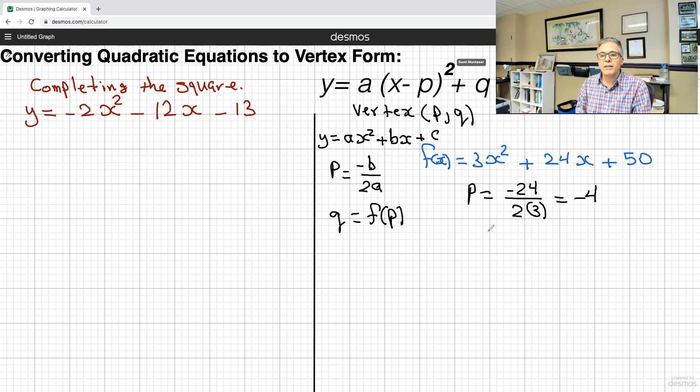Now we found p. Now it's time to find q. q will be 3 times negative 4 squared plus 24 times negative 4 plus 50. So basically what we did, we took the p value, the negative 4, we subbed it in for the x to find what q is. And that I'm just going to do on my calculator. And I get 2, so q equals 2.